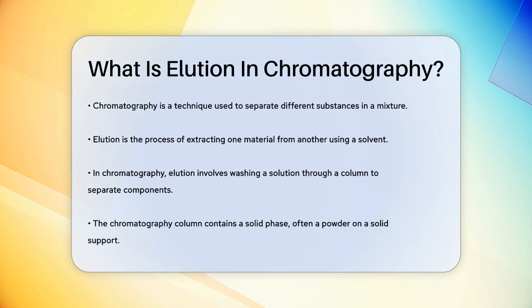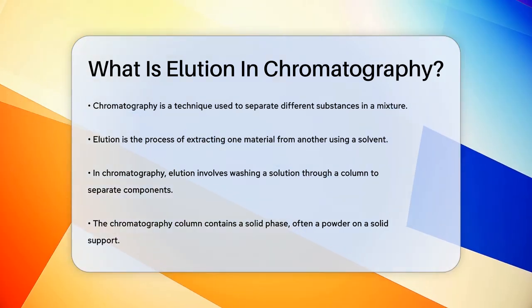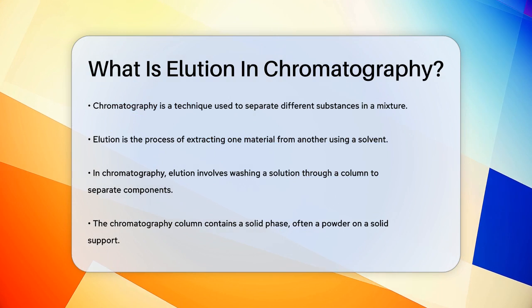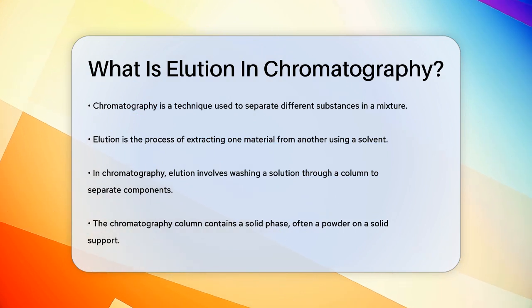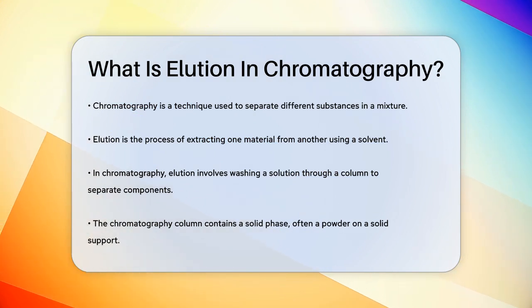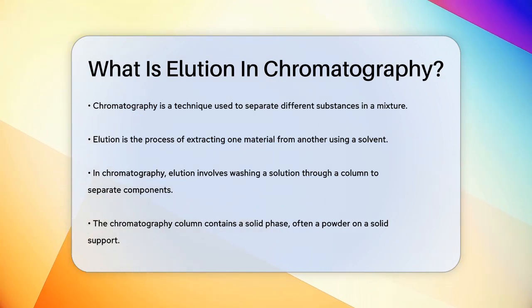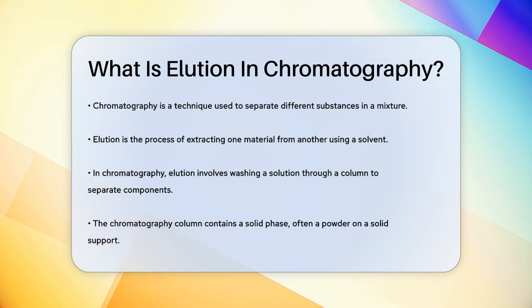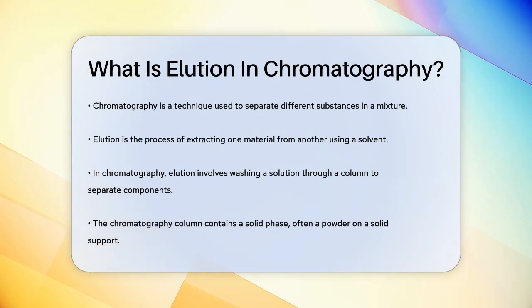Elution is essentially the process of extracting one material from another using a solvent. In chromatography, this means washing a solution through a column to separate the different components.